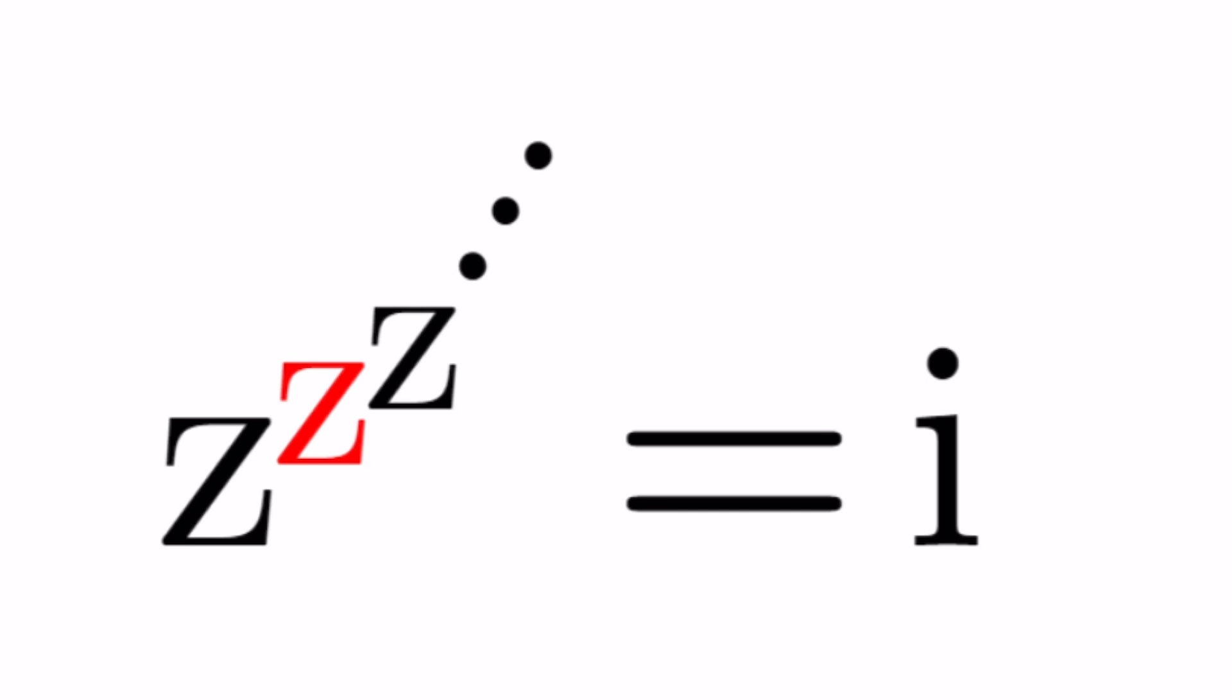So since z to the power z to the power z that exponential tower is equivalent to i we can go ahead and do the following. Let me go ahead and rewrite this on a darker background because that was the image that I used for the thumbnail and I just was kind of lazy and wanted to use the same one.